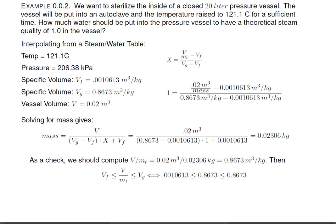As a check, we should compute V over M sub t, and we've done that right here. This is to make sure that we will be within saturation conditions. So, we compute that and we get 0.8673. Then you want to put that number in between the specific volume of the fluid and the specific volume of the gas and make sure it meets this equation. Well, it does, just barely, but then that's what you expect since we were trying to get a steam quality of 1.